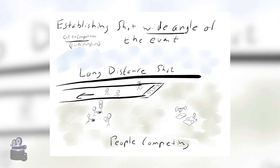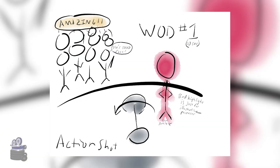Then we move into the competition portion of the video, establishing a wide-angle shot of the competition event, seeing other people competing in the background. Then we start out with the workouts. We highlight the athlete primarily, with people in the background very excited. All of these action shots are going to be during the actual competition, seeing them work.